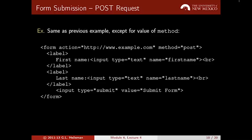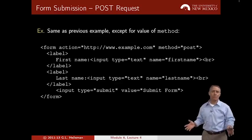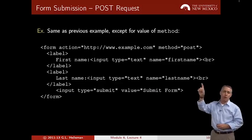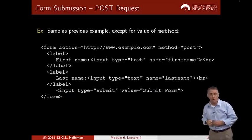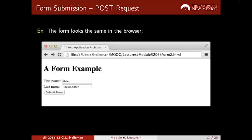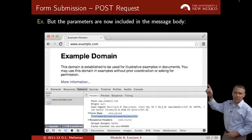This is the exact same example as the previous one. The only thing that's changed is the method is now POST rather than GET. Let's look at what that looks like in the browser. It looks identical. I've entered a first name and a last name, and when I click 'submit form', the URL is now unchanged — there's no URL encoding.